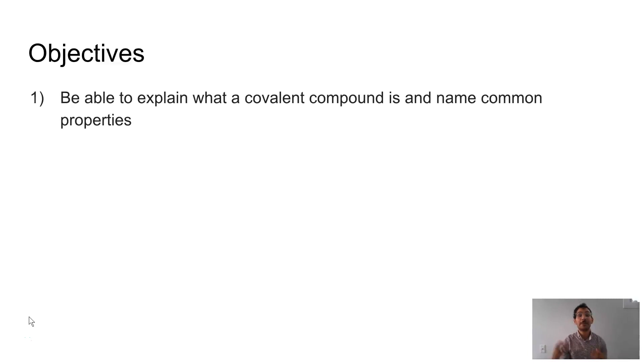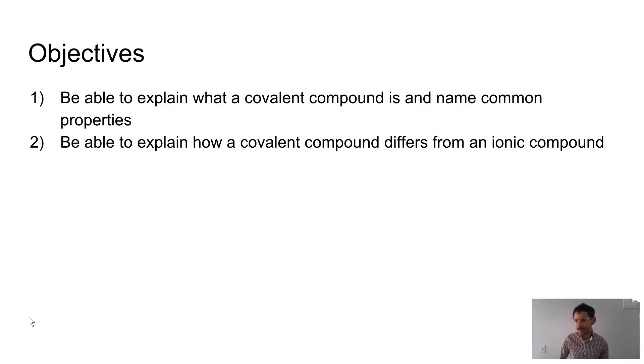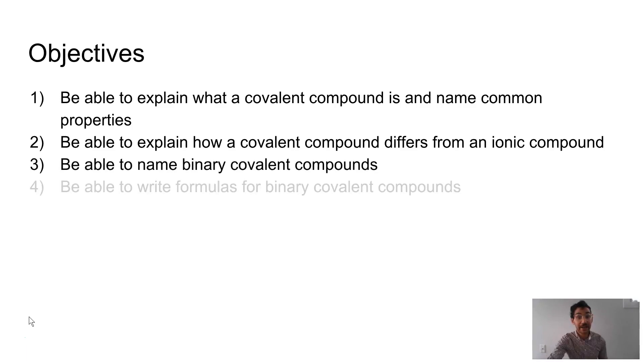So objectives. I would like you to be able to explain what a covalent compound is and name common properties of covalent compounds. I would like you to be able to explain how covalent compounds differ from ionic compounds. I would like you to be able to name binary ionic compounds and write formulas for binary ionic compounds.